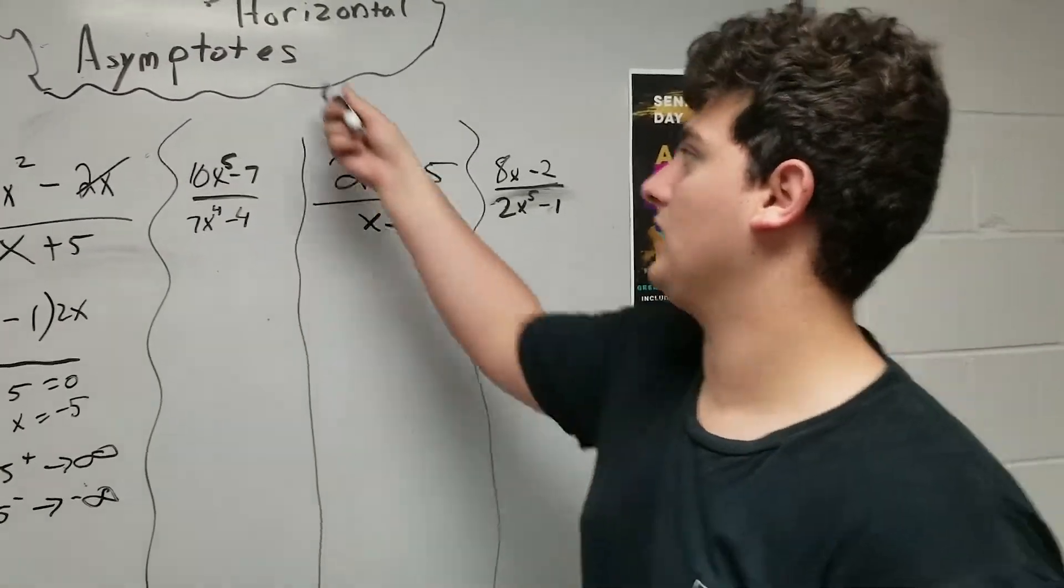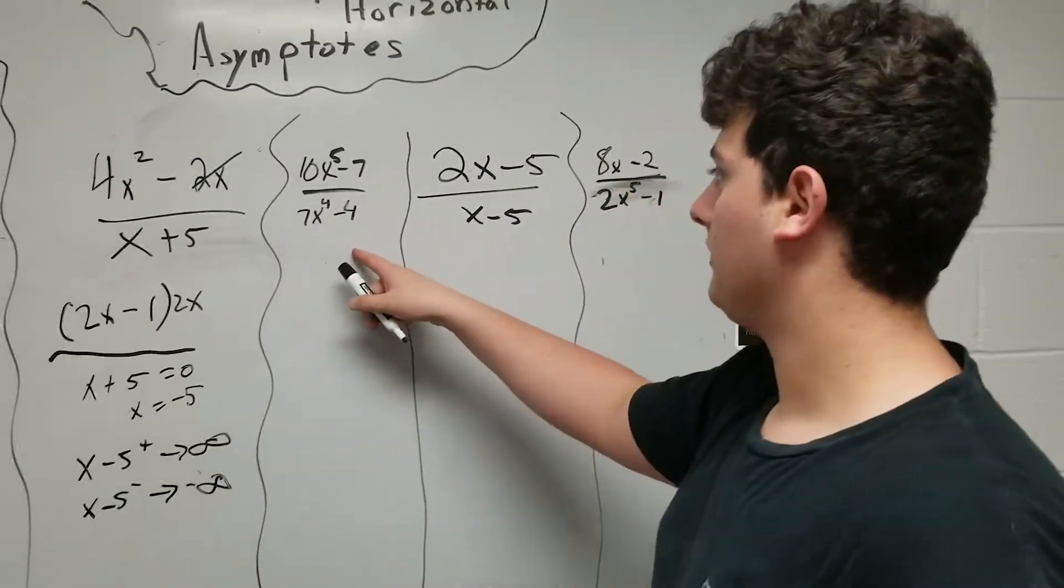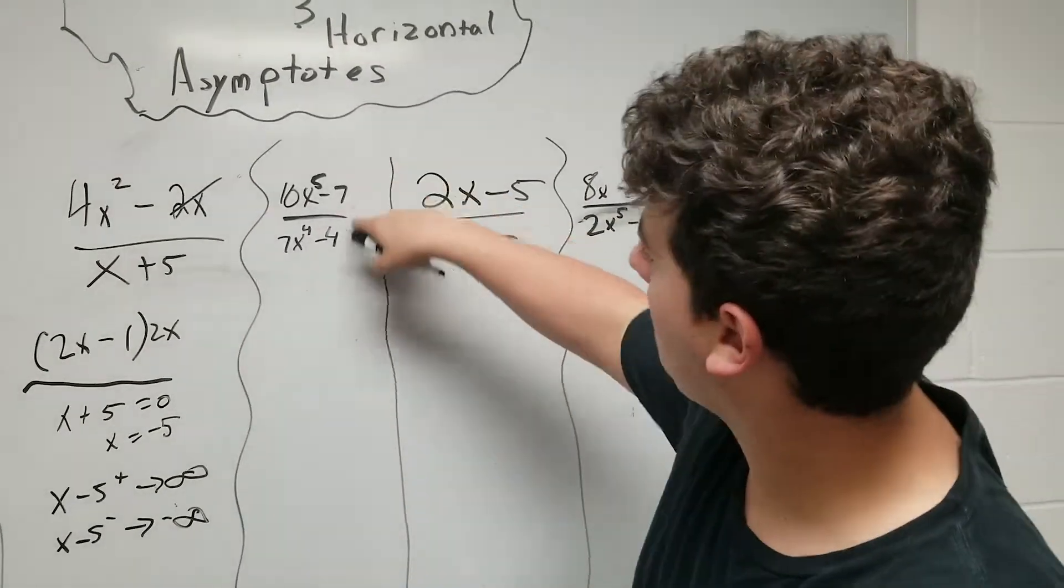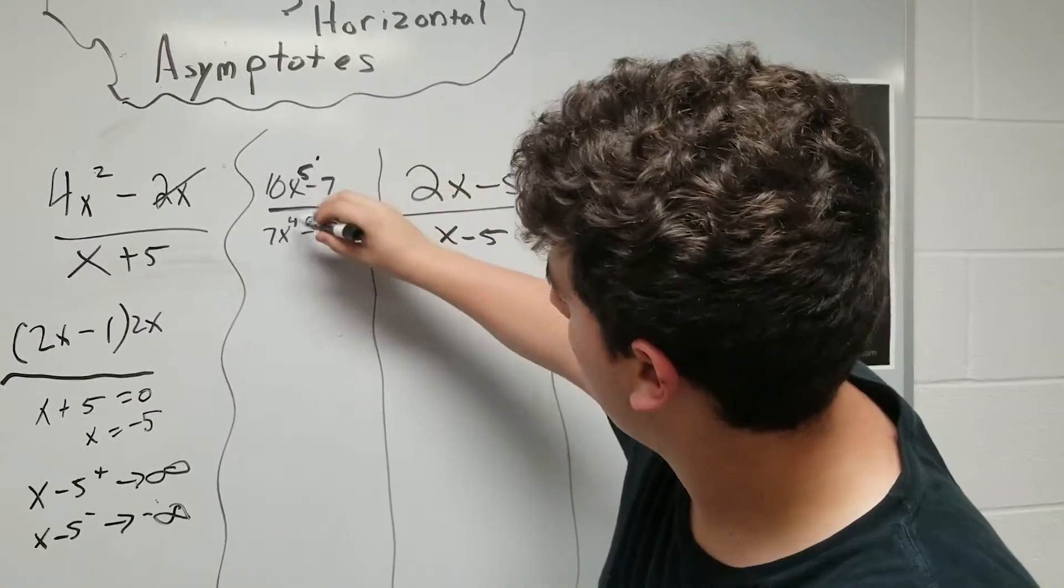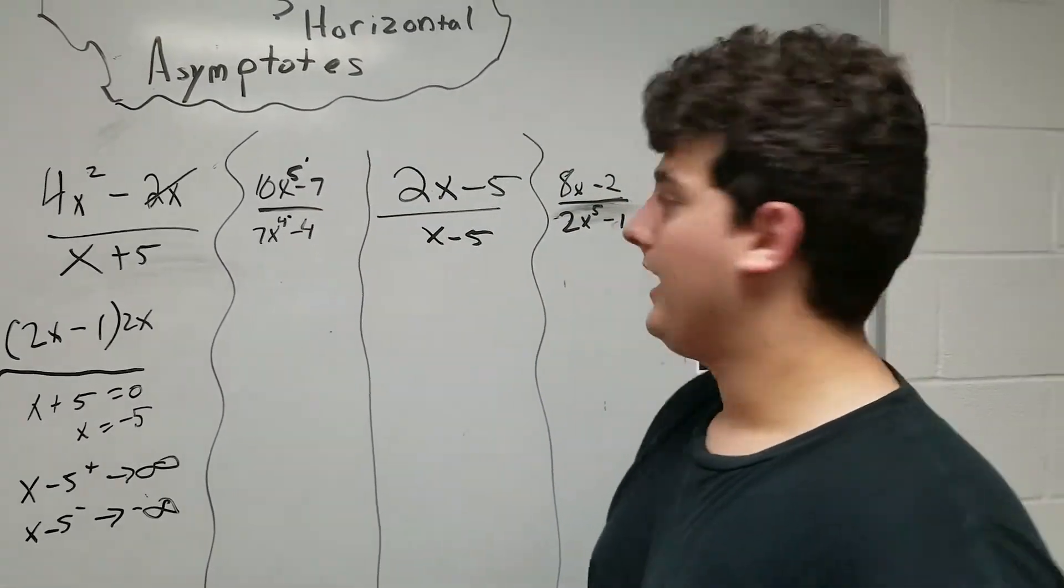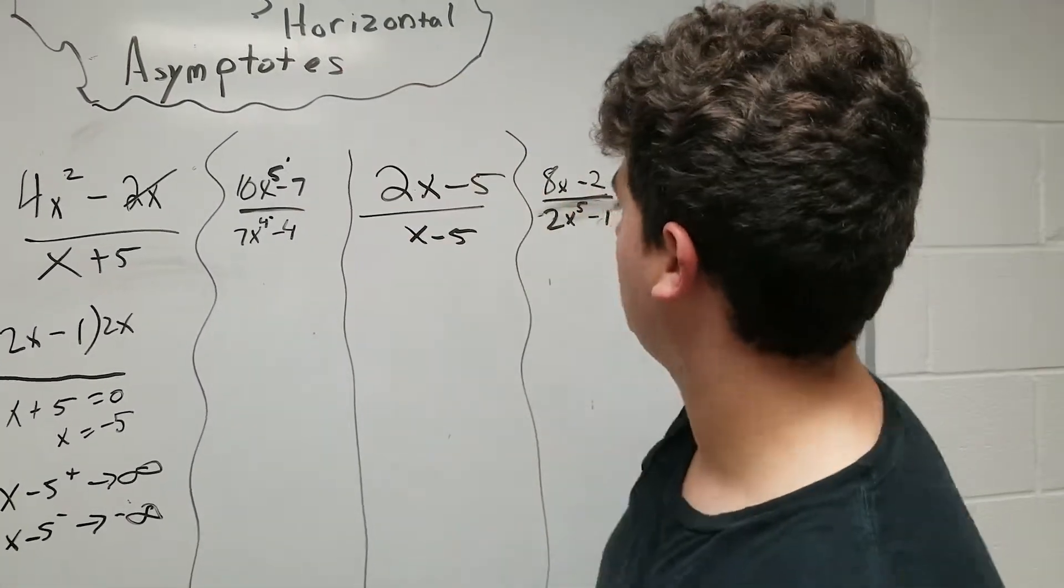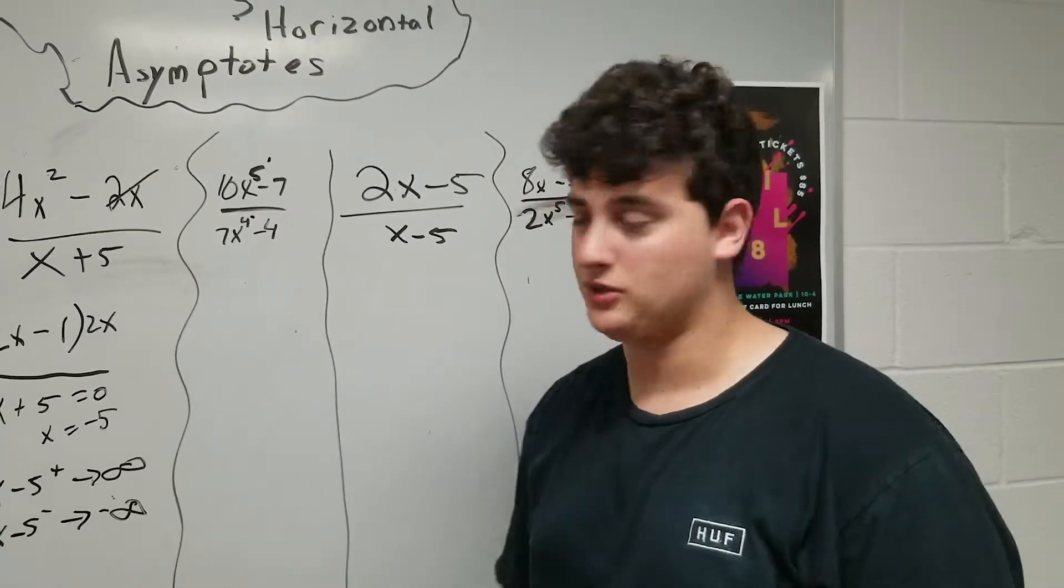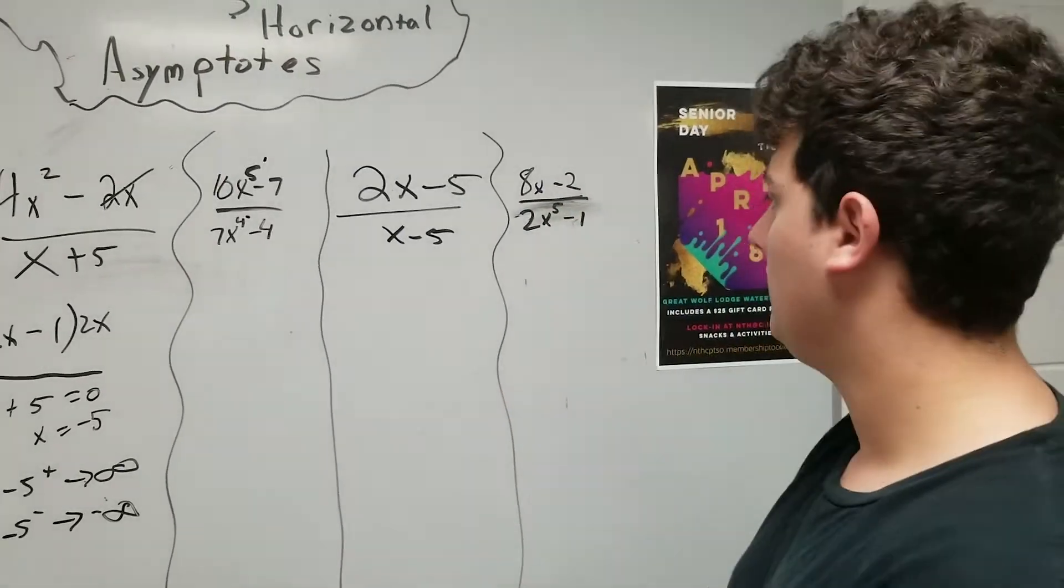Three types of horizontal asymptotes. For the first one, it's top-heavy when I look at the exponent. Whenever you do horizontal asymptotes, you need to look at only the exponents, because that tells you if it's going to be top-heavy, bottom-heavy, or equal.